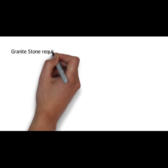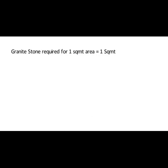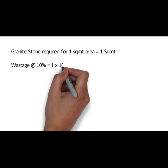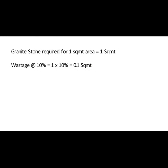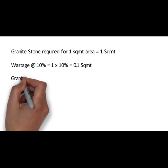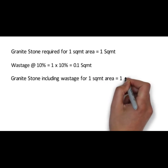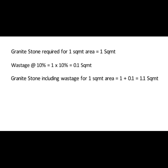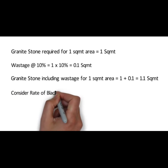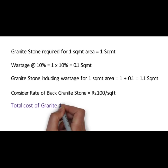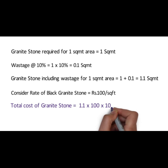Granite stone required for one square meter area is equal to one square meter. For granite stone, the wastage is 10%, that is 1 into 10% equals 0.1 square meter. Granite stone including wastage for one square meter area shall be 1 plus 0.1 equals 1.1 square meter. Considering the rate of black granite stone at 100 rupees per square feet, the total cost of granite stone shall be 1.1 into 100 into 10.764, which equals 1184 rupees.